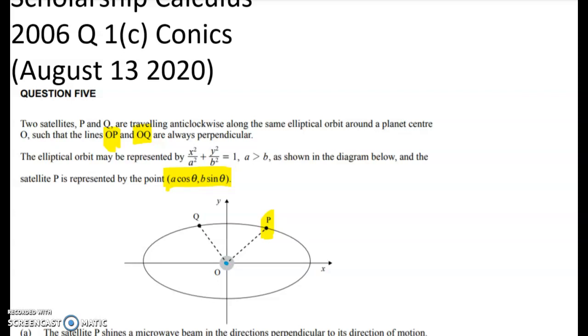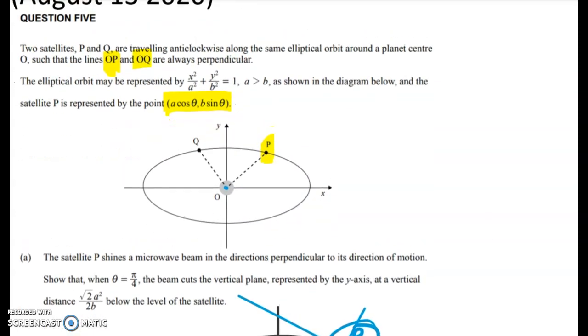Now, satellite P shines a microwave in the directions perpendicular to its direction of motion. So let's look at what's happening. We've got this point here that's travelling around. And as it does that, it's putting out a microwave beam. And so if the direction of motion you can think of has been given by a series of tangents, the microwave beam is going to be the normal to the curve.